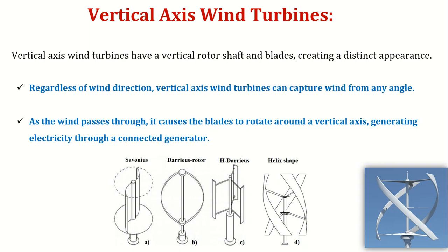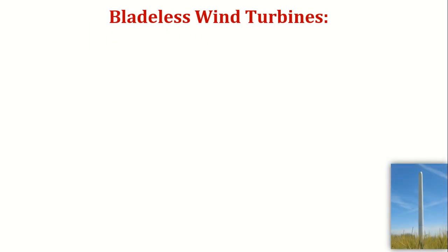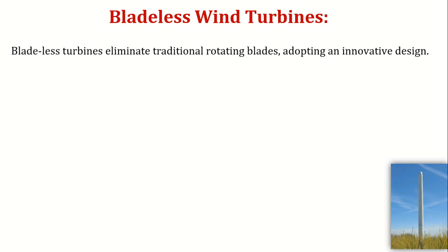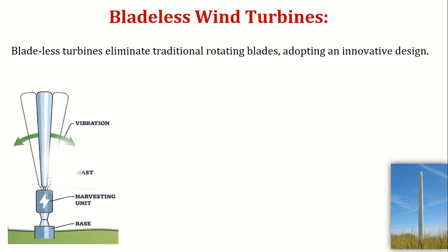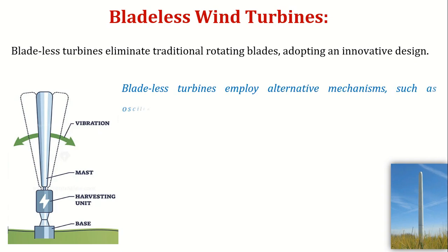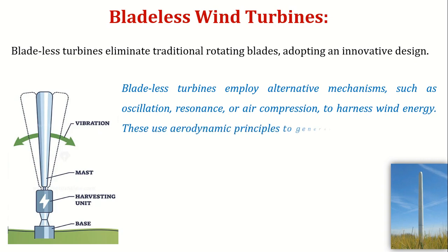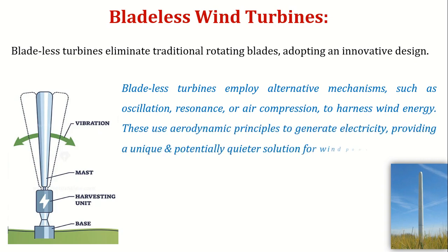Generating electricity through a connected generator. In the last comes the bladeless wind turbine. Bladeless turbines eliminate traditional rotating blades, adopting an innovative design. Bladeless turbines employ alternative mechanisms such as oscillation, resonance, or air compression to harness wind energy. These use aerodynamic principles to generate electricity, providing a unique and potentially quieter solution for wind power generation.